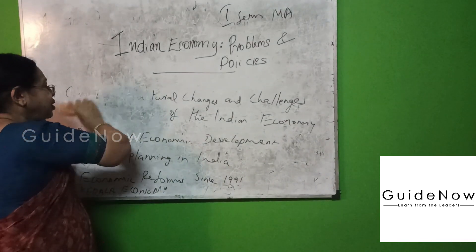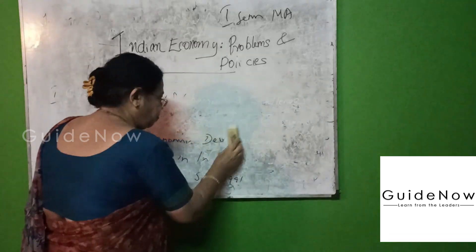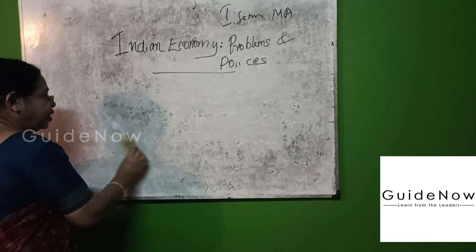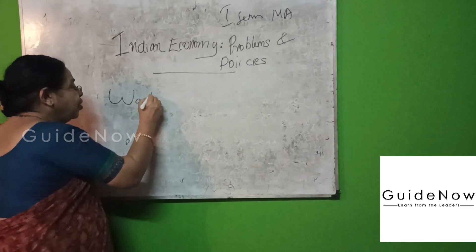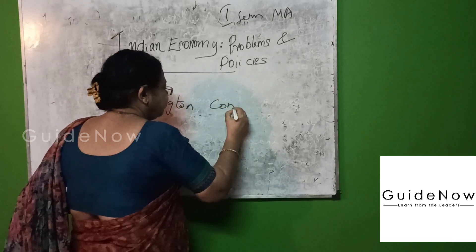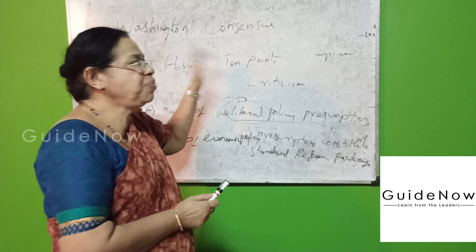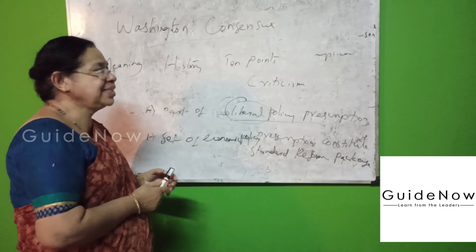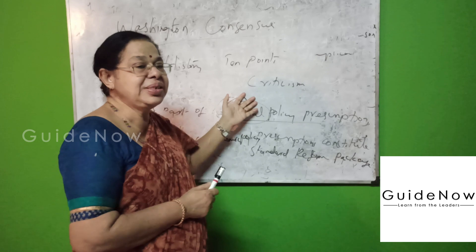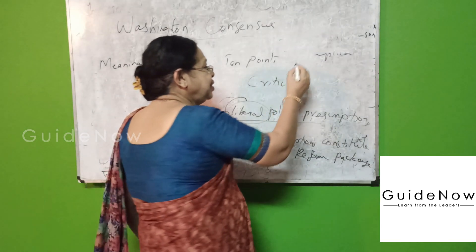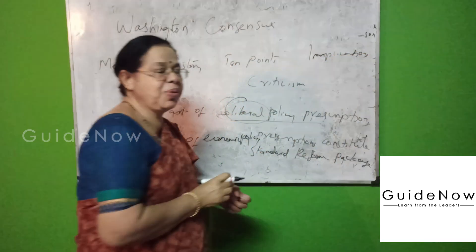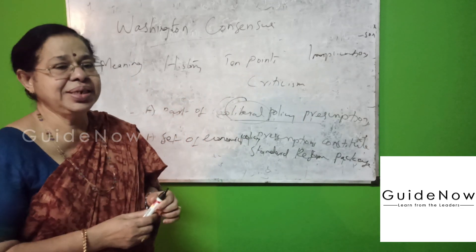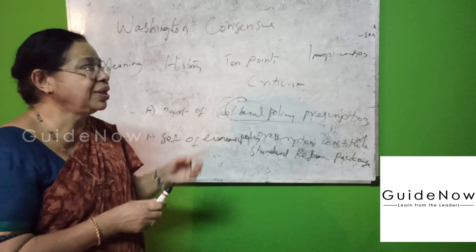Among these, we will now introduce which are the new topics included in this paper. One of the important new topics is Washington Consensus. To explain Washington Consensus, it is mainly classified into several components: the meaning of Washington Consensus, its history, ten points of policy recommendations, its implications, and finally, the criticism and the merits of Washington Consensus.